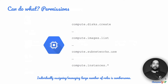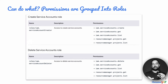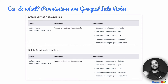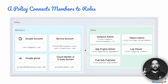An easier way to handle this is to group permissions into roles. For example, a service account creator has the ability to create a service account, get service accounts, and list all service accounts — and also has permissions related to listing or getting a particular project. It is these roles that we assign to members. The process of assigning roles to members comes together in what is called a policy, which connects members to roles and defines the permissions allowed on resources.